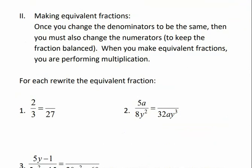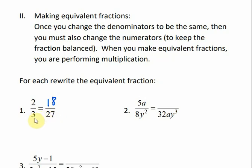Now, before we add or subtract, we're going to talk about what equivalent fractions are and how to find them. In order to find an equivalent fraction, first we have to compare the parts of the fractions. If I look at these two fractions, I can ask myself: what do I need to multiply 3 by to get 27? We know that 3 times 9 is 27. So if I multiply the numerator by the same thing — times 9 — I would get 18, and that makes equivalent fractions.